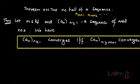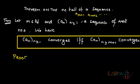If you take out m terms from a sequence, it will not change its convergence behavior. In case a_n is convergent, it will still be convergent. Let us now try to prove this theorem.